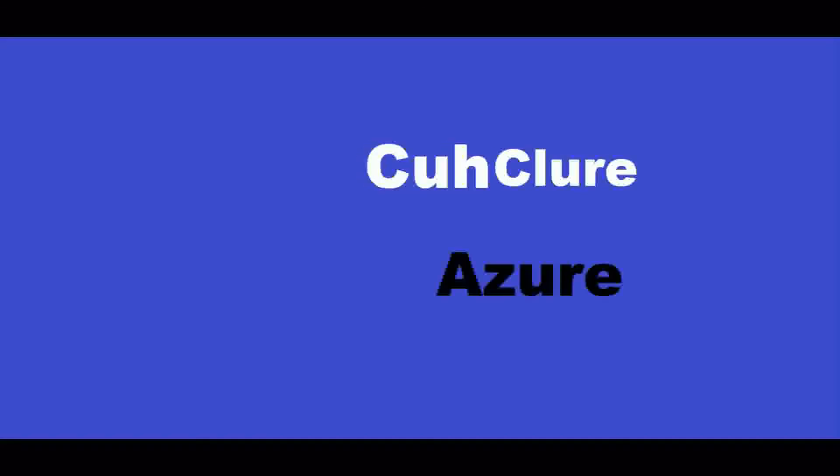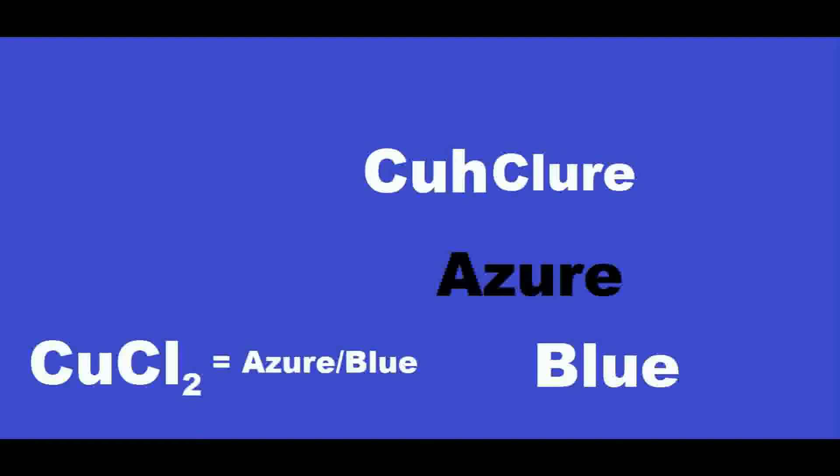Let's make up a word for this one: C-Clear. C-Clear rhymes with azure — sort of — and azure is a type of blue. So CuCl2 is azure, or a type of blue. That is it for the flame tests.